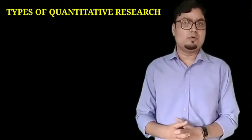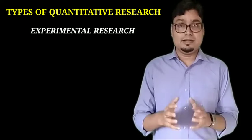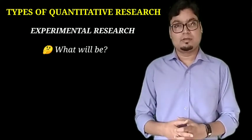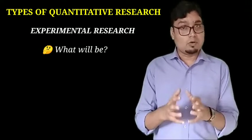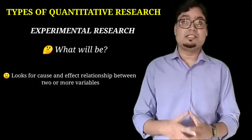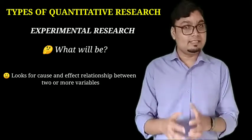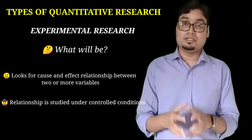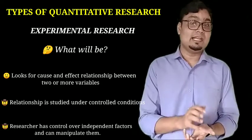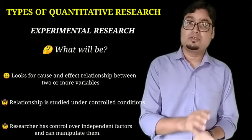The third type of quantitative research is experimental research, which deals with the question 'what will be?' It also looks for cause-and-effect relationships between two or more variables, but in this type of research the researcher has control over the independent variables or causal factors.